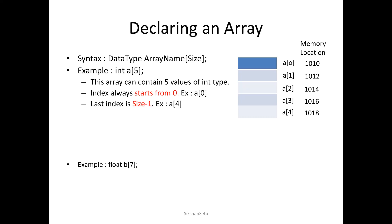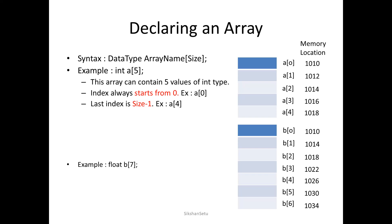Now suppose we declare a float array: 'float b[7]'. Then 7 memory locations are created, named b[0] to b[6]. Since a float occupies 4 bytes, if the first element is at address 1010, the next is at 1014, then 1018, and so on — a gap of 4 bytes between addresses, compared to the gap of 2 bytes for an integer array.